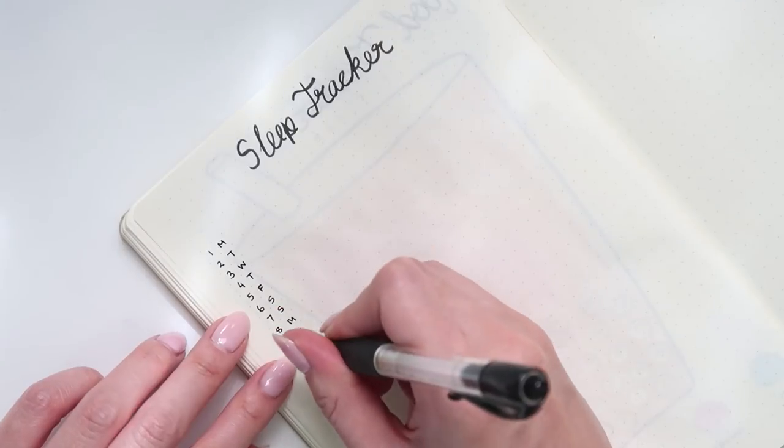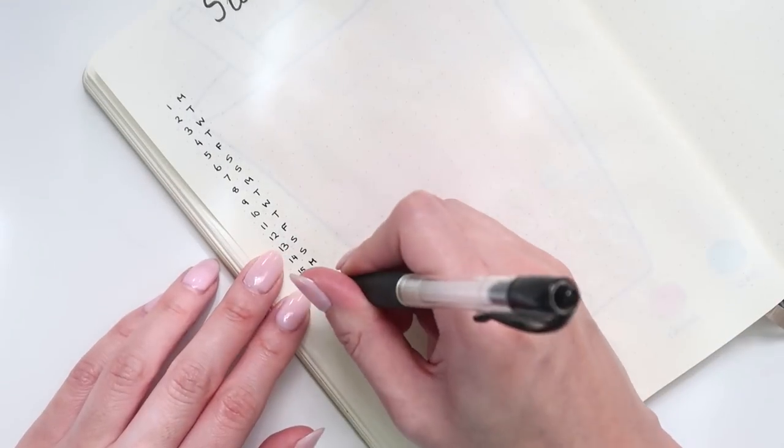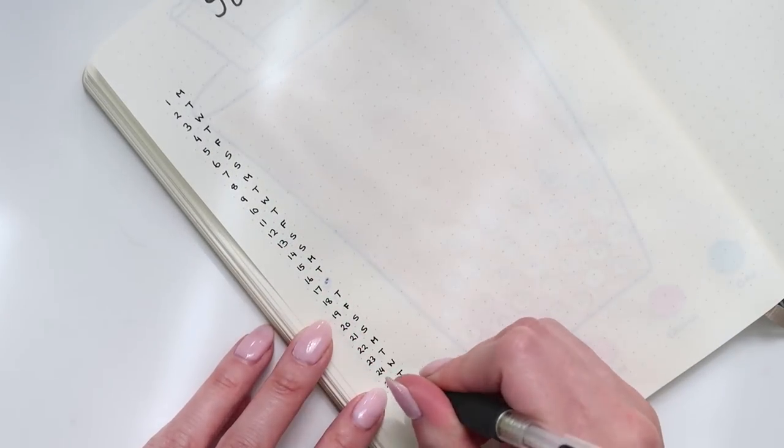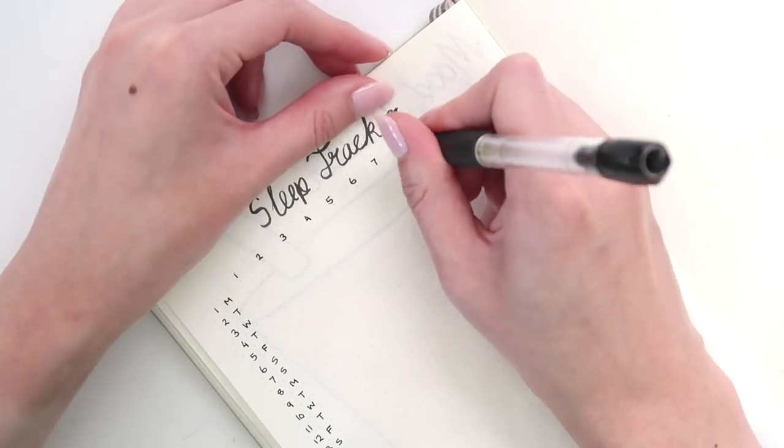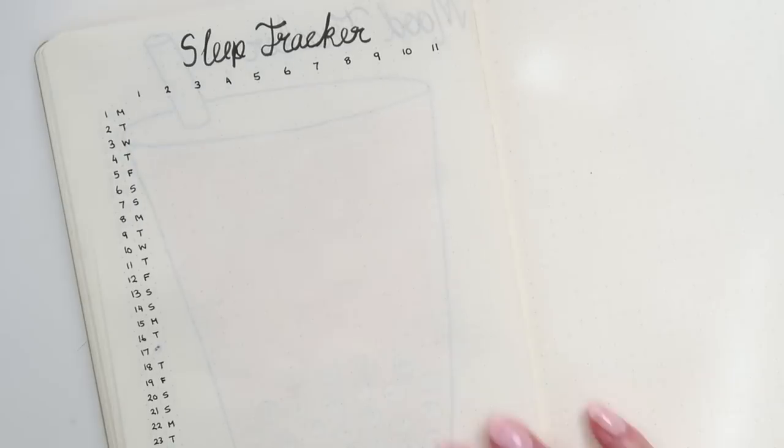So I actually got this particular layout idea from Adagio Studies from Instagram, except she used this layout to track how many hours of piano practice she's done, which actually really took me back, because when I was in high school I was still doing my piano lessons and everything, and I remember having to track how many hours I practiced a day.